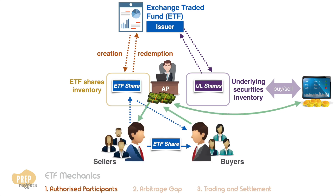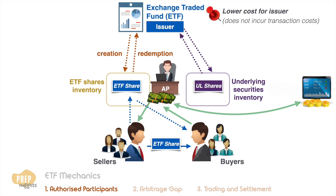This arrangement of having an AP in the middle to handle all transactions serves a number of purposes. Firstly, this lowers costs for the ETF issuer, as it does not incur any transaction cost in the buying and selling of the underlying securities. All the buying and selling is done by the APs.